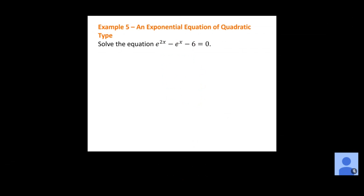Example five: solve e to the 2x minus e to the x minus 6 equals 0. Notice we've got x in the exponents of two different terms. What we're looking for is whether we can factor this. I notice this is almost like a quadratic — the exponents happen to be x values and the bases happen to be e's — and I can actually factor this as two binomials.